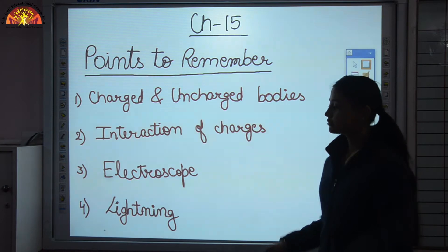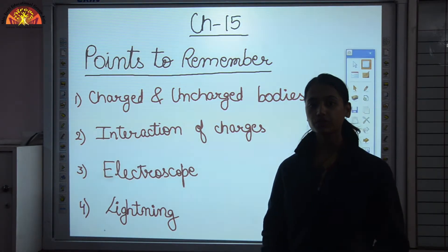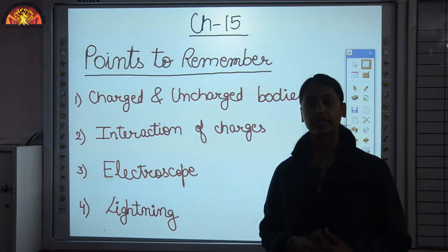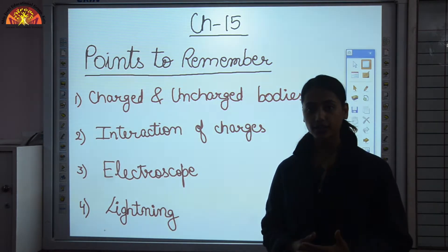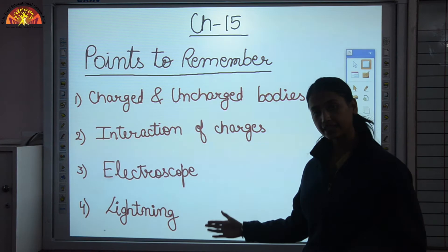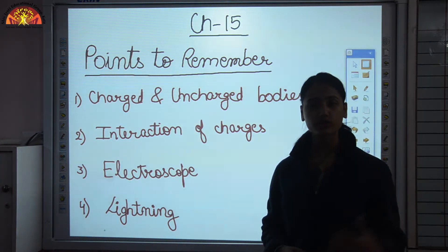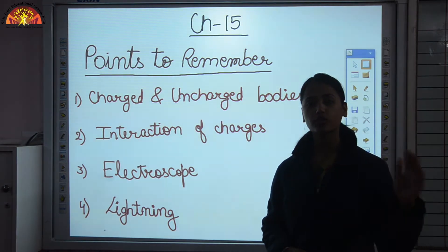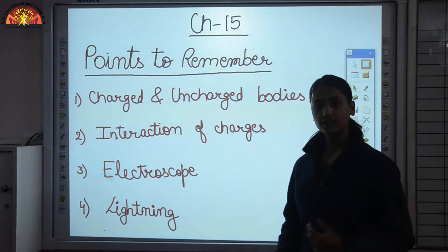To prevent our buildings we use a safety device known as a lightning conductor — a device used to protect our buildings from the effect of lightning. Lightning always looks for the easiest path, so tall objects, tall trees, and tall buildings give lightning an easy path.